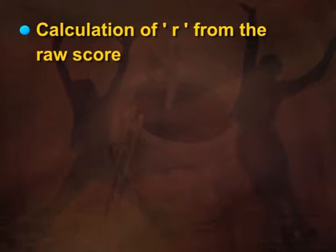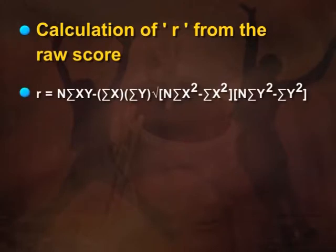As seen from the slide, calculation of r from the raw score can also be done using the formula: r = [n·σxy − (σx)(σy)] / √{[n·σx² − (σx)²][n·σy² − (σy)²]}. We can directly tabulate the raw scores into this formula and find the correlation. The procedure for tabulating the scores and finding correlation from raw scores can be seen from the slide.